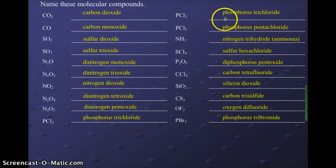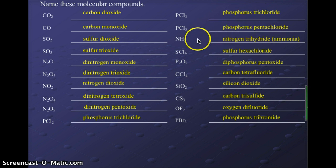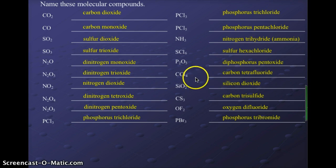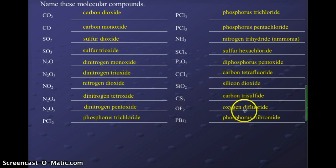PCl₃ is phosphorus trichloride; PCl₅ is phosphorus pentachloride. NH₃ is nitrogen trihydride, most commonly known as ammonia. SCl₆ is sulfur hexachloride; P₂O₅ is diphosphorus pentoxide; CCl₄ is carbon tetrachloride; SiO₂ is silicon dioxide; CS₃ is carbon trisulfide; OF₂ is oxygen difluoride; and PBr₃ is phosphorus tribromide.